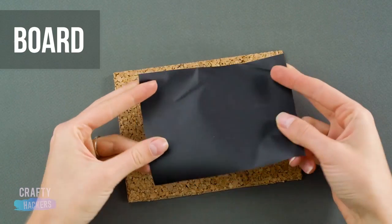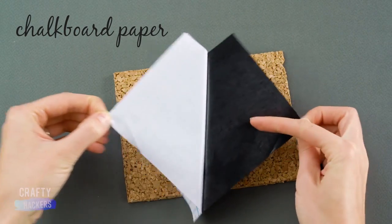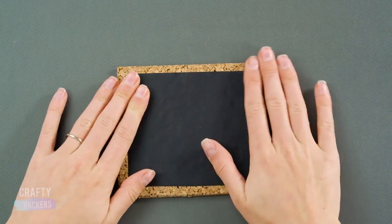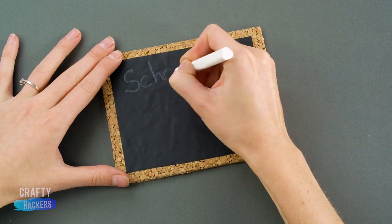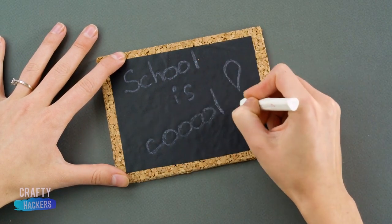Board. Get your hands on some adhesive chalkboard paper and stick it to a piece of cork board. Write the lesson of the day on your chalkboard and hang it up in Barbie's classroom. School is totally cool!